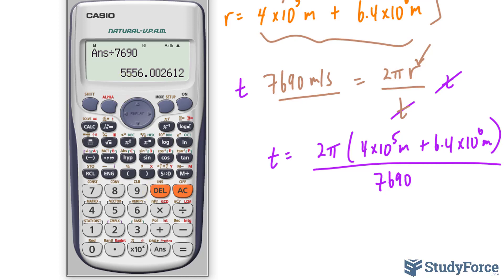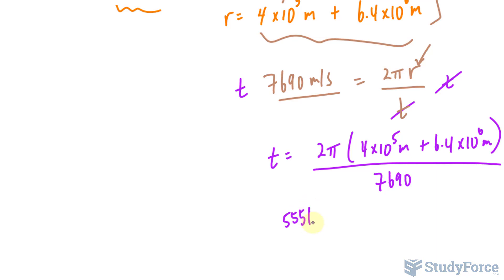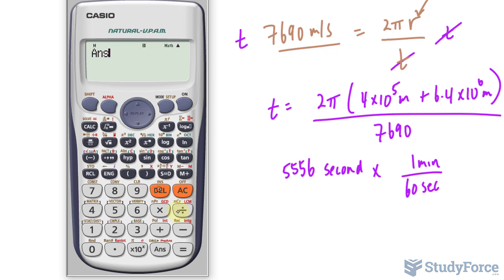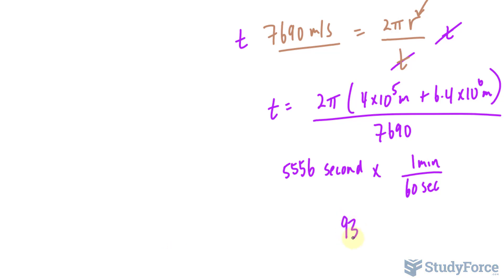That value is in seconds, so you can change that into minutes. 5,556 seconds. There are 60 seconds in a minute, so dividing this by 60 gives us 92.6, or 92 to 93 minutes.